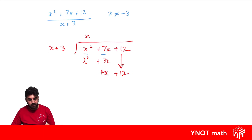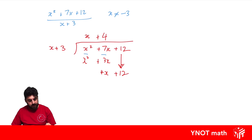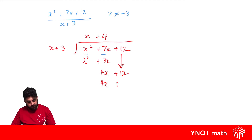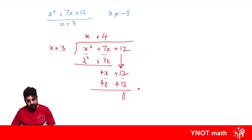Then we repeat the process with our result. How many times does this leading term go into this leading term, or what do we need to multiply this by to get us here? That would be 4. We multiply out: 4 times x gives 4x, and 4 times positive 3 gives positive 12. We then subtract: 4x minus 4x gives 0, and 12 minus 12 gives 0. There's nothing to bring down, so we've finished.